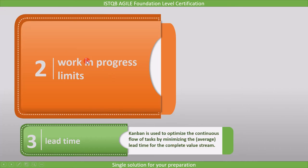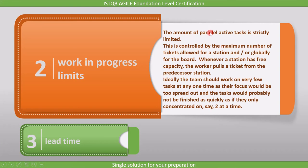The next instrument is work-in-progress limits. In Kanban, the amount of parallel active tasks is strictly limited. This is controlled by the maximum number of tickets allowed for a station and/or globally for the board. Whenever a station has free capacity, the worker pulls a ticket from the predecessor station. Ideally, the team should work on very few tasks at any one time, as their focus would be too spread out, and tasks would probably not be finished as quickly as if they only concentrate on, let's say, two at a time.